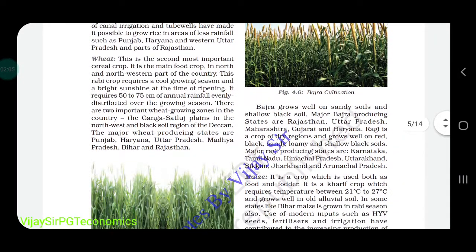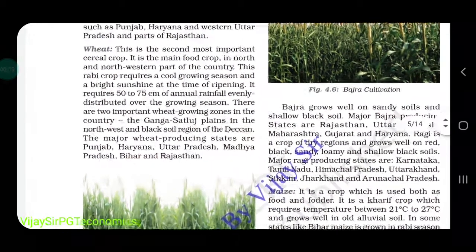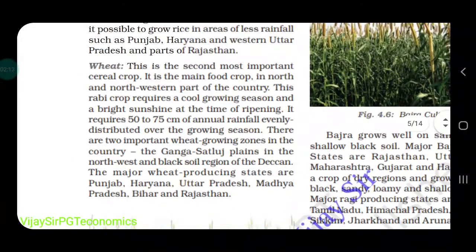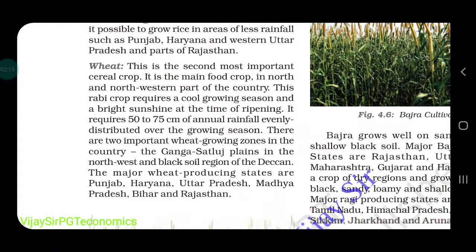Now moving to wheat. Wheat is the second most important cereal crop and the main food crop in the north and northwestern part of the country, including Rajasthan, Madhya Pradesh, Uttar Pradesh, Uttarakhand, and Chhattisgarh.